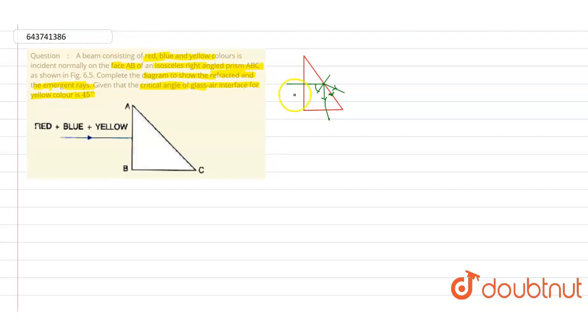This is the complete diagram - this is the incident ray and we will make 45 degrees here to the normal. So this is the blue color, this is the red color, and the middle one is a yellow color.